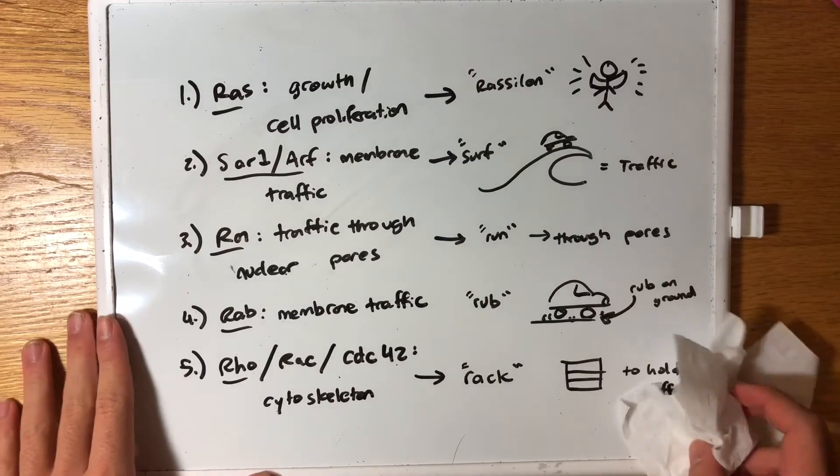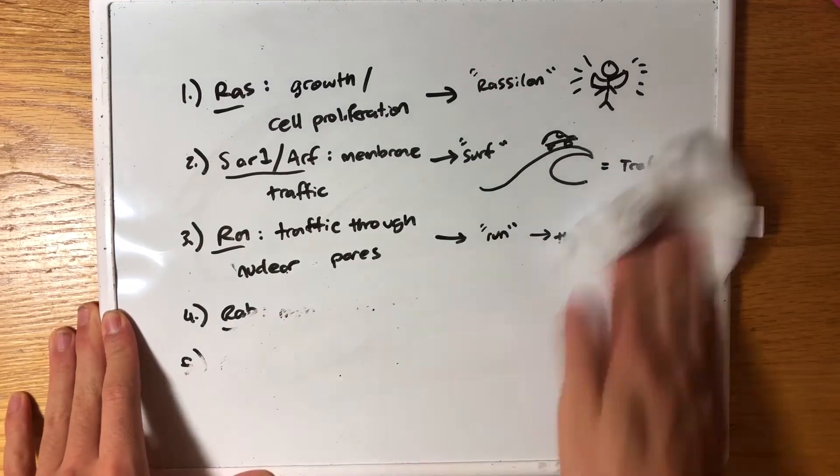Finally, for Rho, Rac, and Cdc42, I chose 'rack' — like a cytoskeleton, a rack holds structure and holds things up. Thanks for watching! Don't forget to like and comment below with more ideas, and don't forget to subscribe.